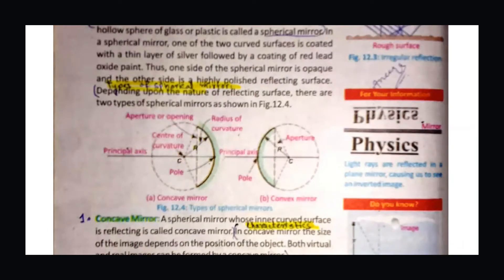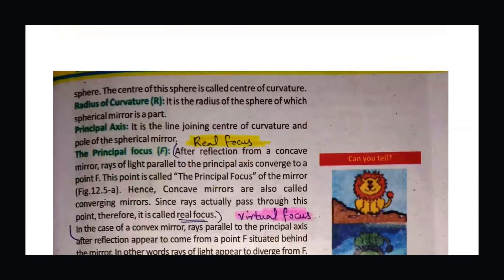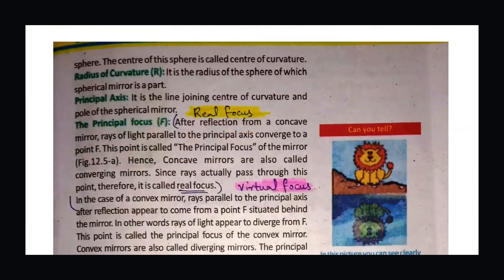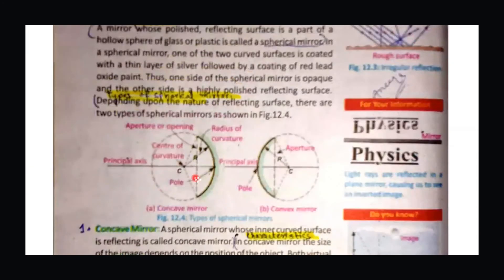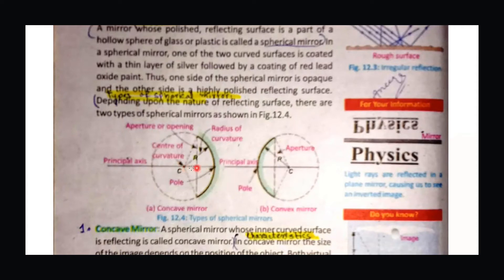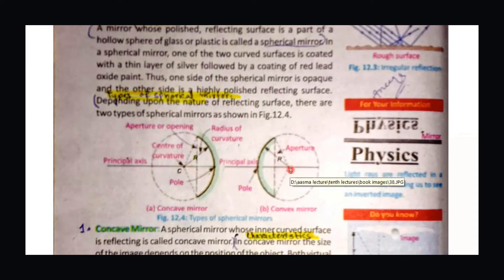Now we have to see the principal axis and focus. The principal axis is the line joining the center of curvature and the pole of the spherical mirror. The pole is in the middle of the curved surface, and the center of curvature is the center of the sphere. The line from the center of curvature to the pole is known as the principal axis.